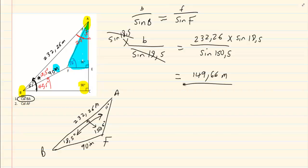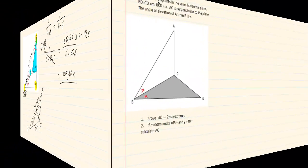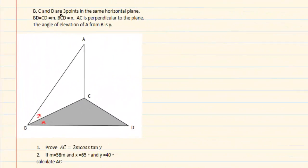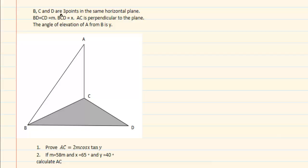Let us do another example. It is given that B, C, and D are three points on a horizontal plane. When they start using those words you need to be careful — you cannot just join angles when they are in different planes.